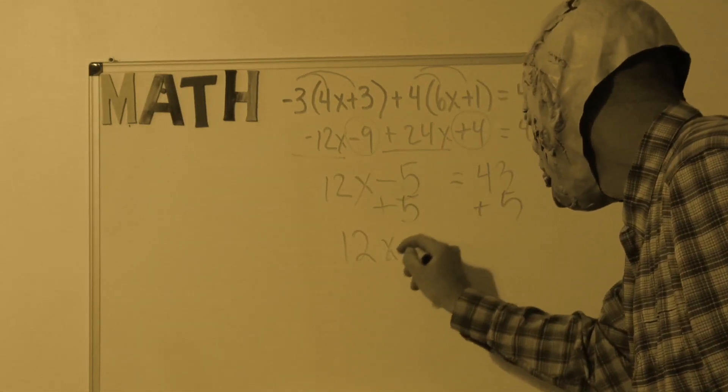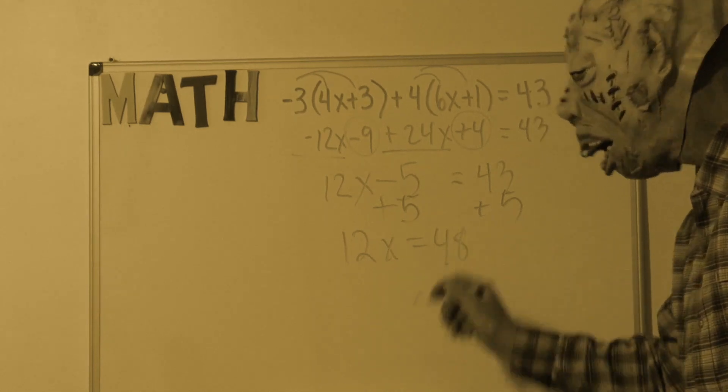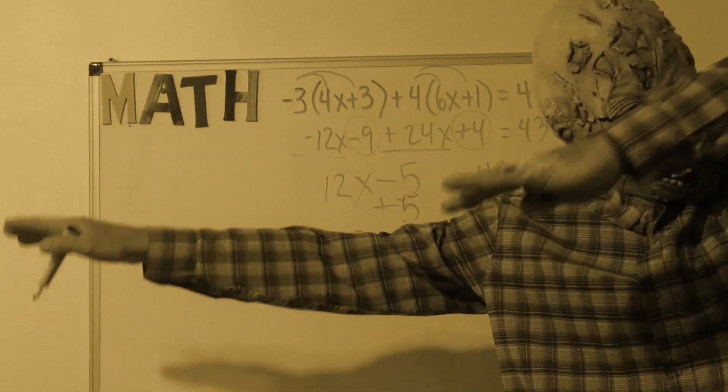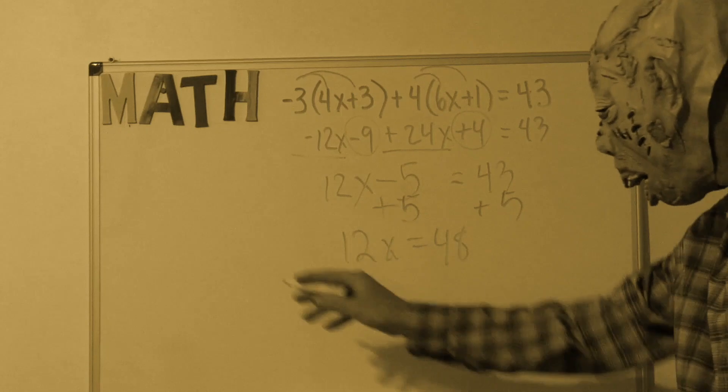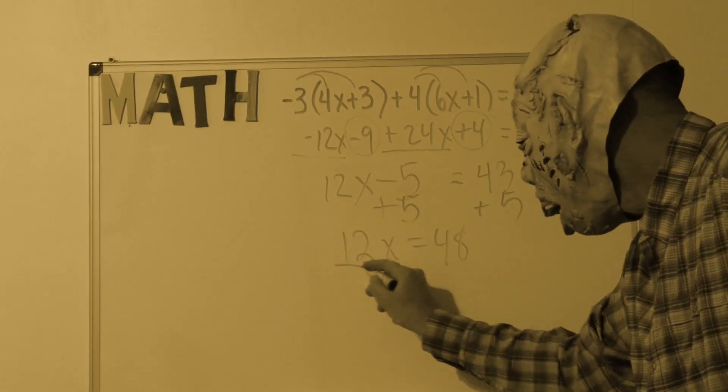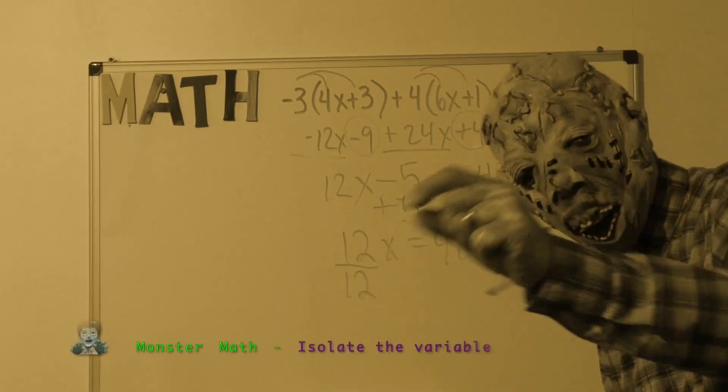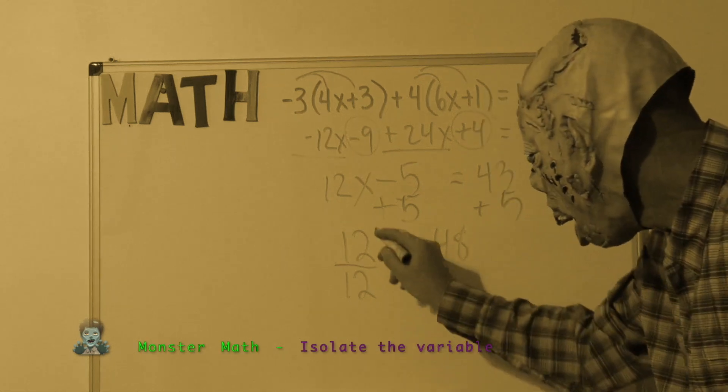That will eliminate that minus 5 on the left side of the equation, leaving me with a one-step equation that reads 12x equals 48. Dividing by 12 will leave me with just one x.